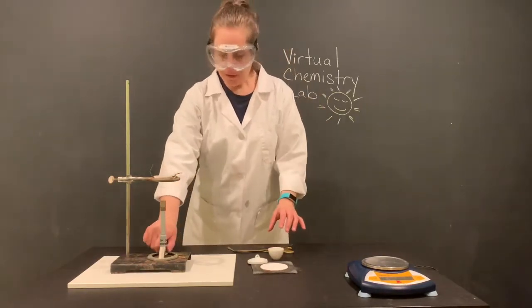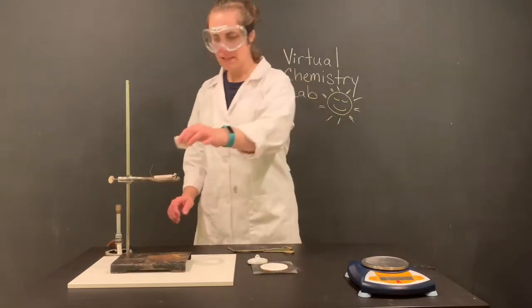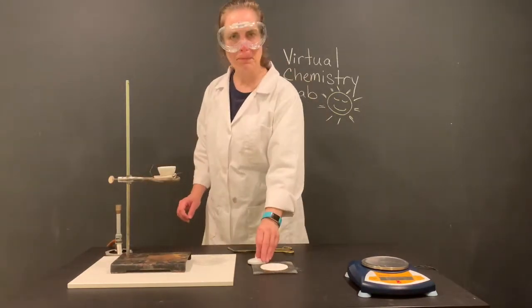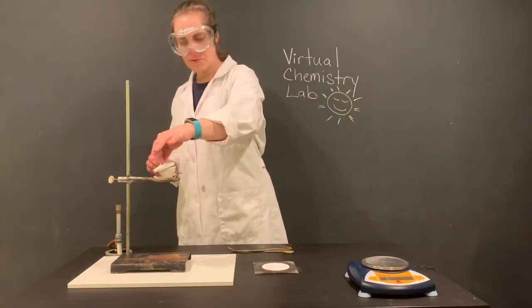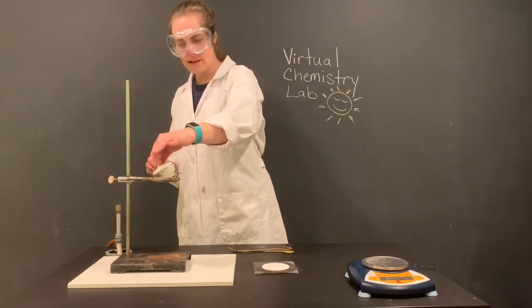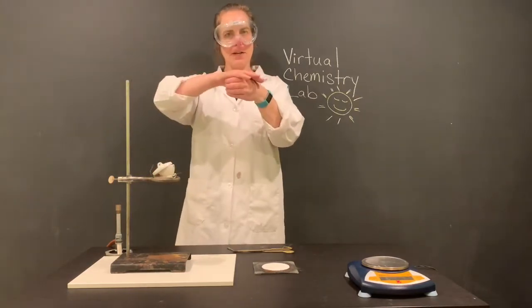Now we're going to move the Bunsen burner away, and we're going to place our crucible with our mixture in it, and we're going to place our crucible top on it. Now notice we didn't take the initial mass with the top, and that's because these tops tend to fall off, because we don't put them on straight, we leave them ajar.